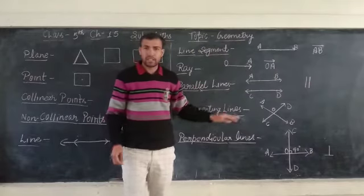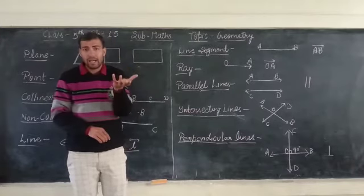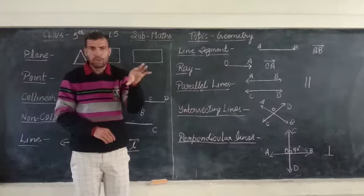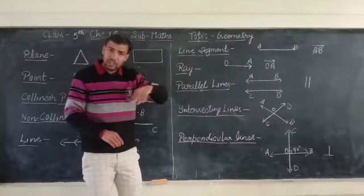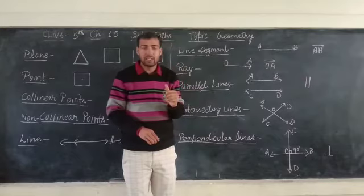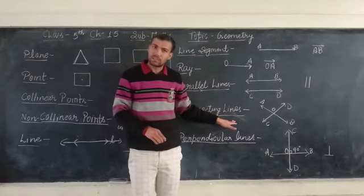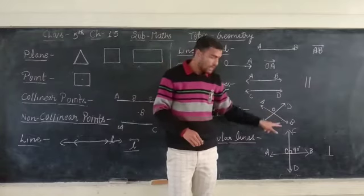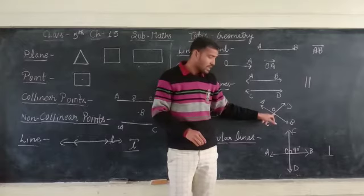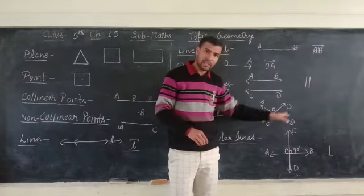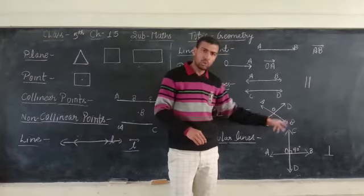Next: Intersecting lines. When two lines meet at any common point O, they are called intersecting lines. Lines A and C are two lines that meet at a common point — those are intersecting lines. The common point where these two lines meet is called the point of intersection.